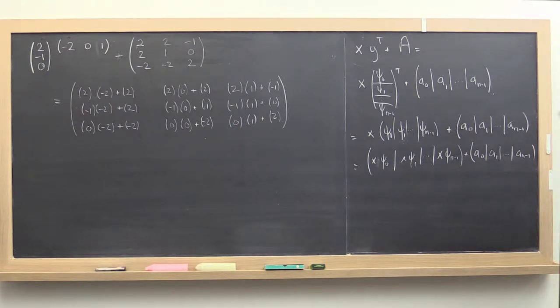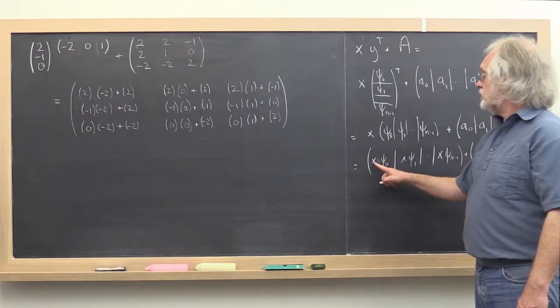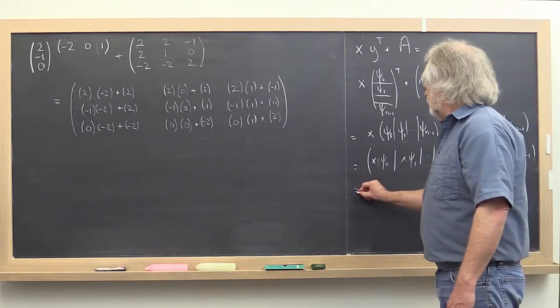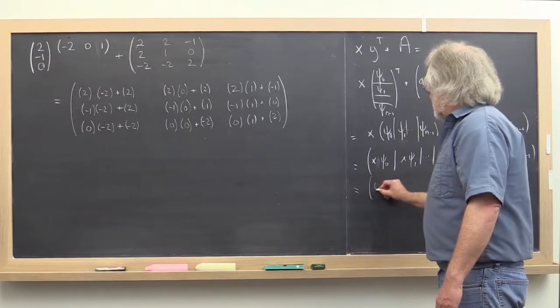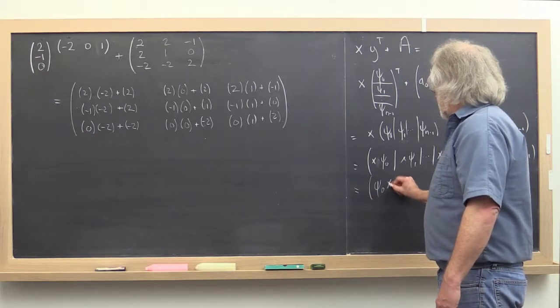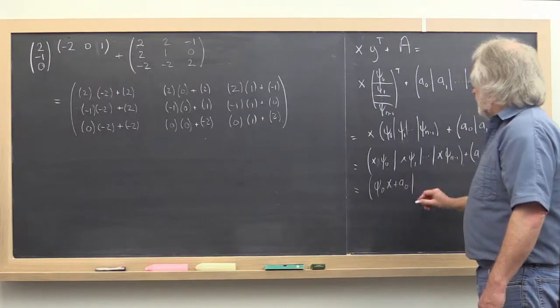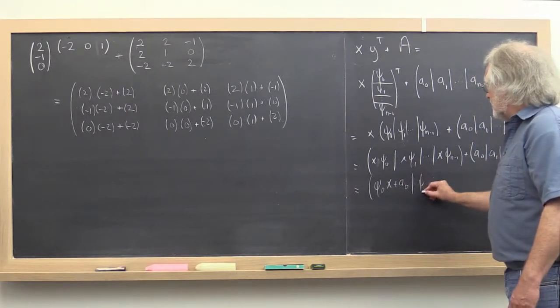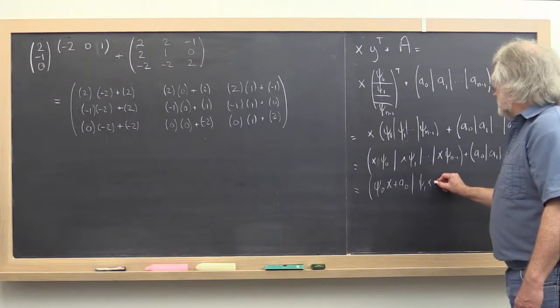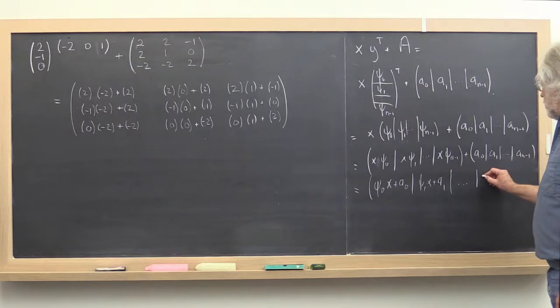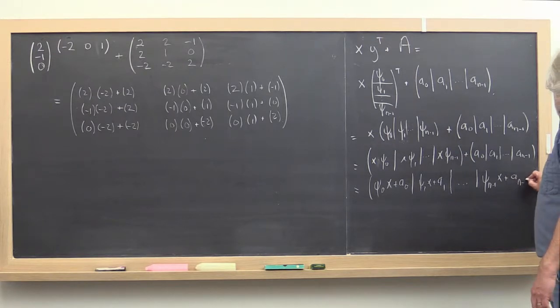Finally, we remember that a vector times a scalar is the same as a scalar times the vector. Therefore, we get psi 0 times x plus the first column of A, then psi 1 times x plus A1, and so forth, finally psi n minus 1 times x plus A n minus 1.